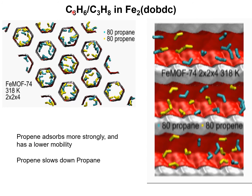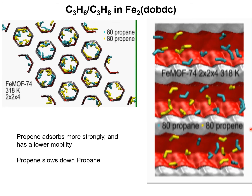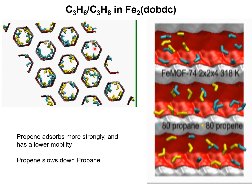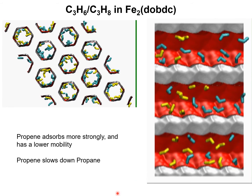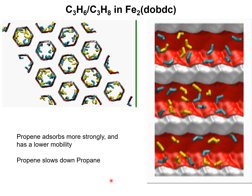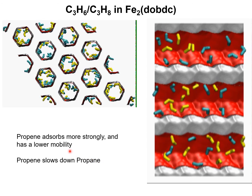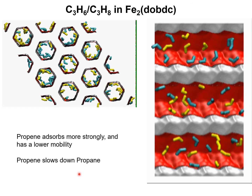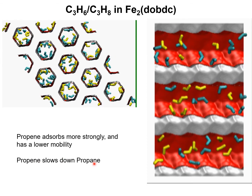Consider separations of propene and propane mixtures in MMOF74. The animations of motion of molecules in the one-dimensional channels show yellow for propene and green for propane. Propene is more strongly adsorbed and has a slightly lower mobility than propane. In a mixture, propene has the effect of slowing down propane.